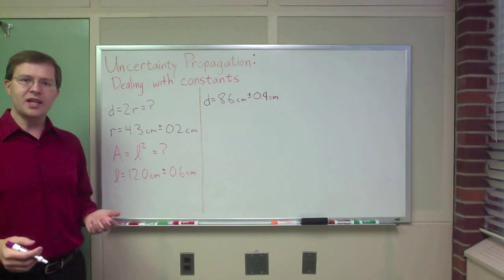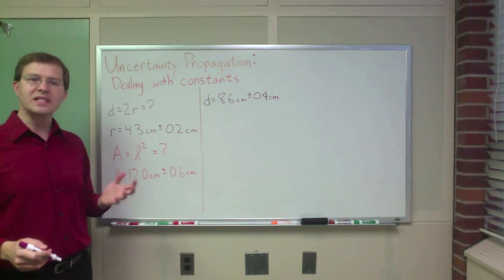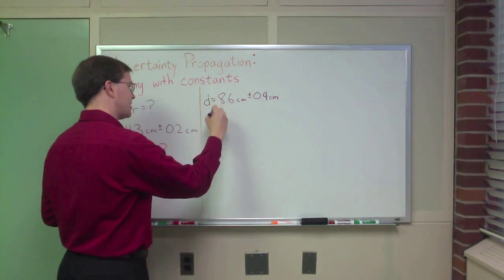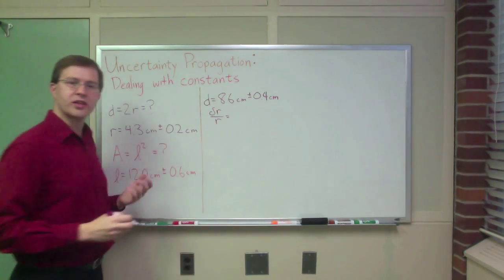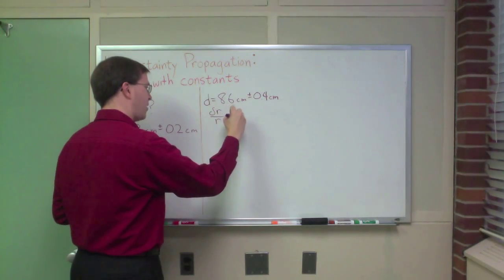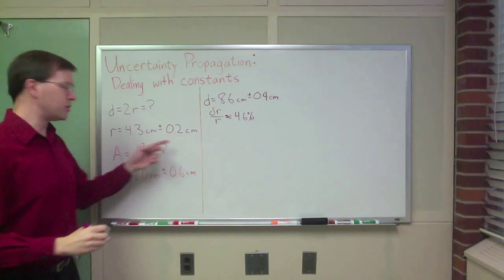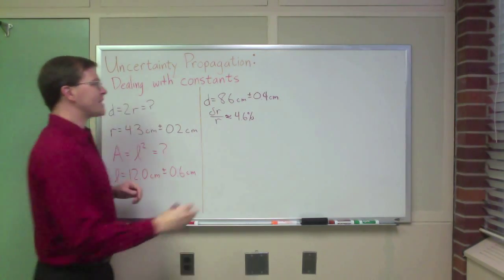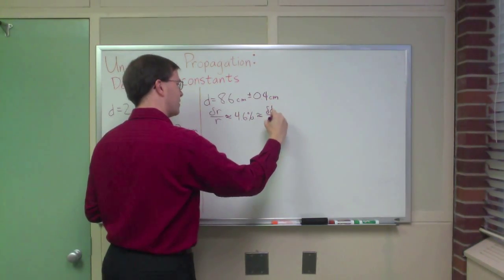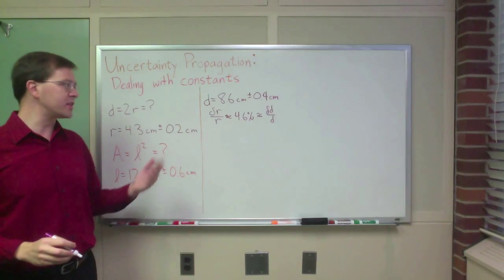Now, another way of thinking about this that's actually kind of useful is to point out that the relative uncertainty stays unchanged in this case. For instance, the uncertainty in the radius divided by the radius, that relative uncertainty in the radius, is equal to about 4.6 percent. That's 0.2 divided by 4.3. And that's actually going to be exactly the same as the uncertainty in the diameter divided by the diameter. Scaling by a constant doesn't change relative uncertainty.